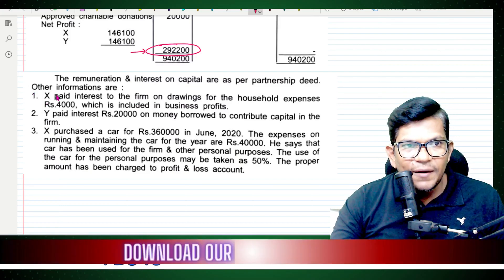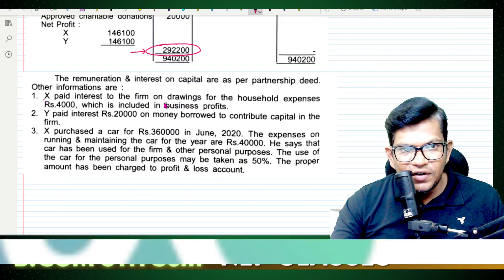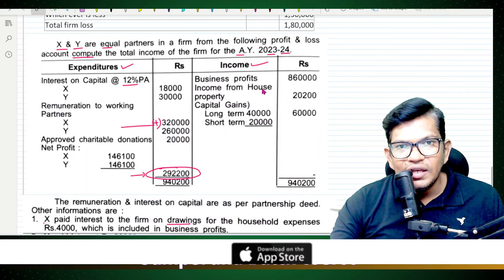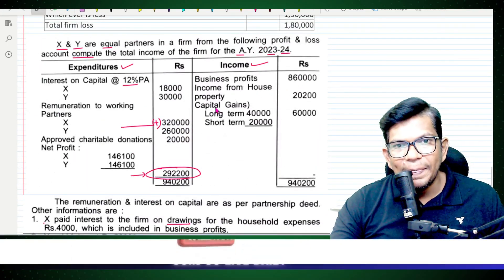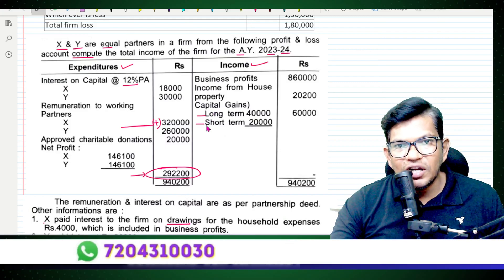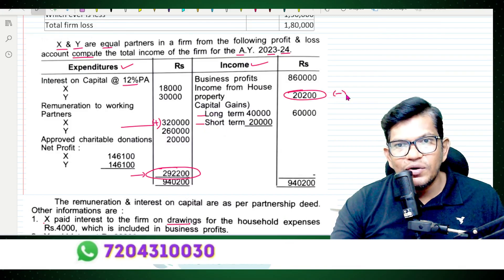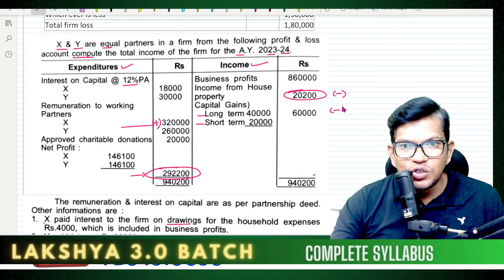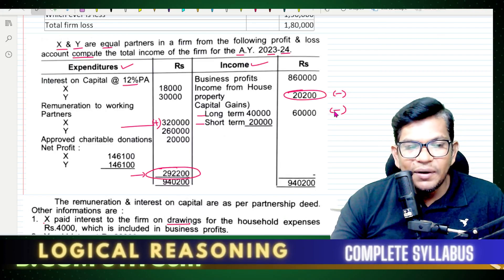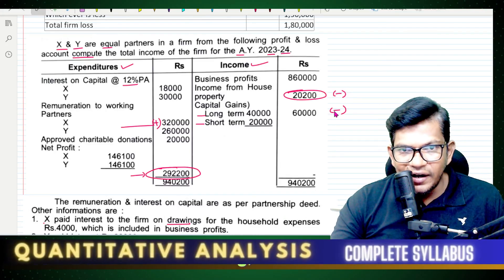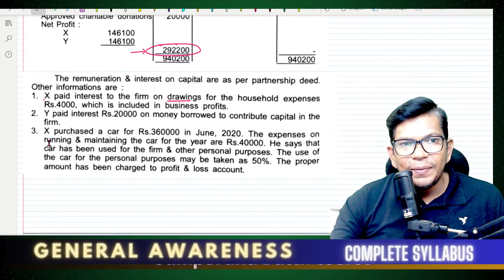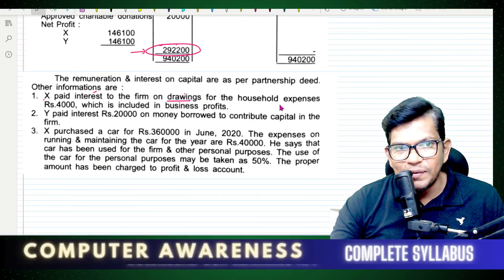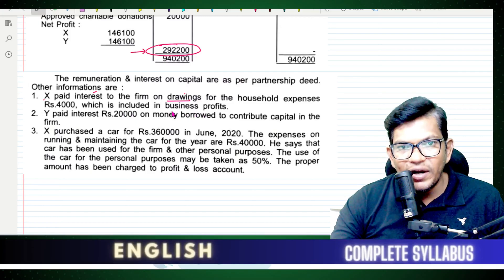Other information: X paid interest to the firm on drawings — for household expenses — 4,000, which should be included in the business profit. Income from house property is also mentioned, along with income chargeable under other heads.